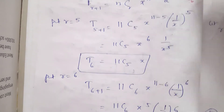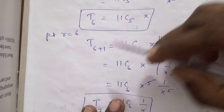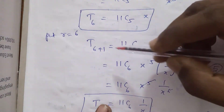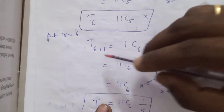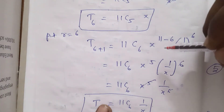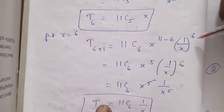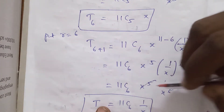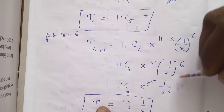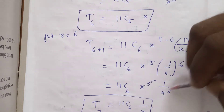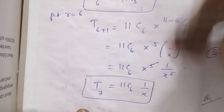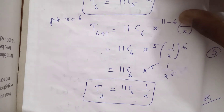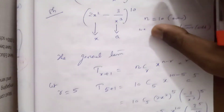For r = 6: T(6+1) = T7 = 11C6 · x^(11-6) · (1/x)^6 = 11C6 · x^5 · (1/x^6). Since x^5 / x^6 = 1/x, the final answer is T7 = 11C6 · (1/x).